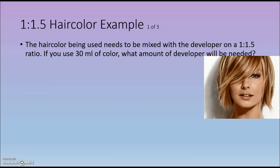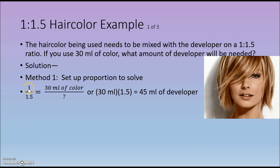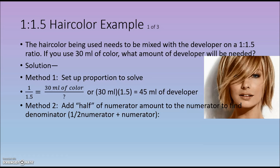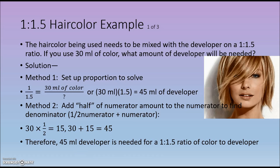Turning now to hair color examples: the hair color being used needs to be mixed with developer on a 1 to 1.5 ratio. If you use 30 milliliters of color, what amount of developer is needed? Setting up a proportion, 1 times 30 gives us 30, so we multiply the denominator by 30 as well. 30 times 1.5 results in 45 milliliters of developer. Using the halving method: half of 30 is 15, added to 30 gives us 45 milliliters of developer.